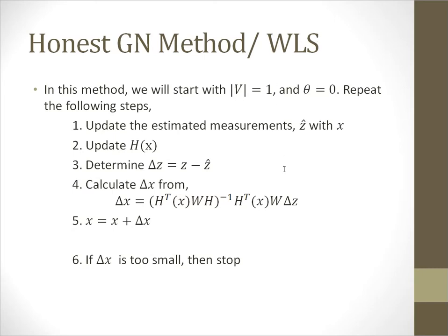In the weighted least squared estimator, we will start with voltage magnitude equals 1 and theta equals 0. Using these values, we will calculate the estimated measurements Z hat and the Jacobian matrix H.